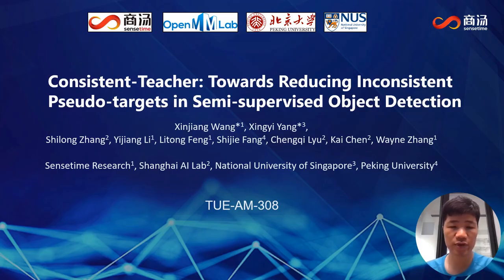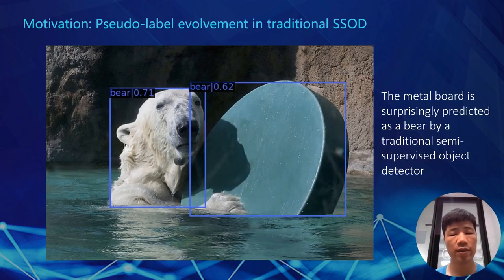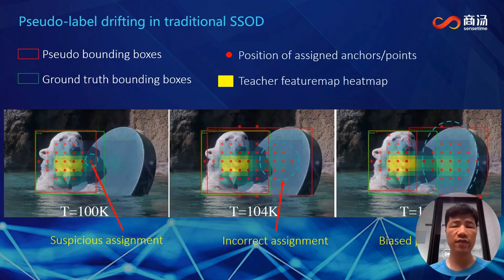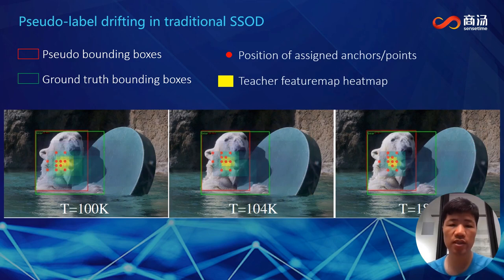Hi, I'm Xinjiang Wang. Today I'm going to present Consistent Teacher. For normal semi-supervised object detection, a teacher detector generates pseudo-labels for the student to update weights. However, there is a loophole in this iteration. For example, the metal board nearby the polar bear is misclassified as a bear as well. This weird phenomenon is attributed to a set of inconsistencies: the teacher's feature map heatmap is inconsistent with the anchors assigned as positive by the pseudo-bounding box during training. In the iteration after another, the bias accumulates. Once we fix the inconsistency issues, the performance boosts.